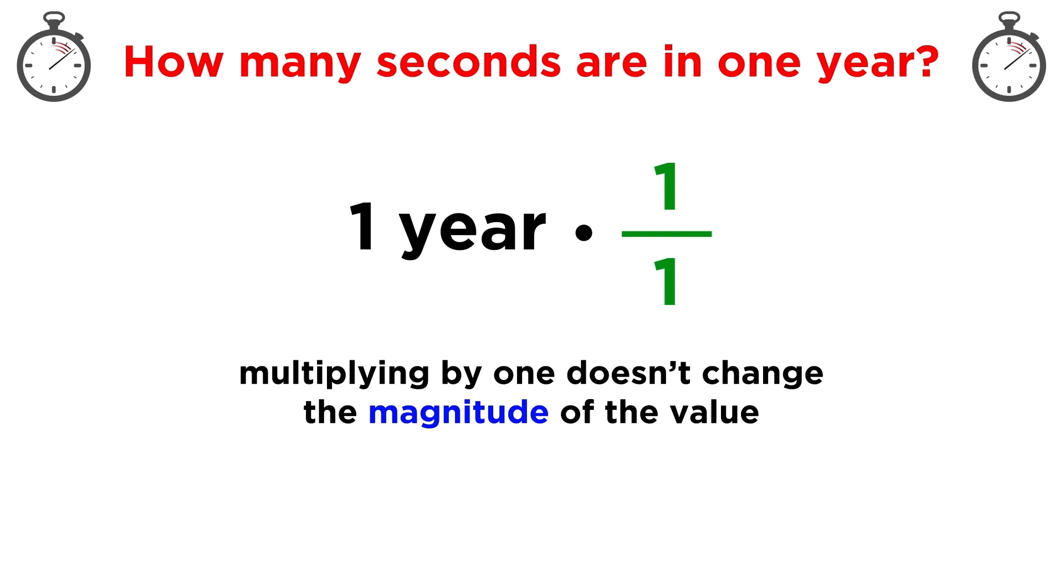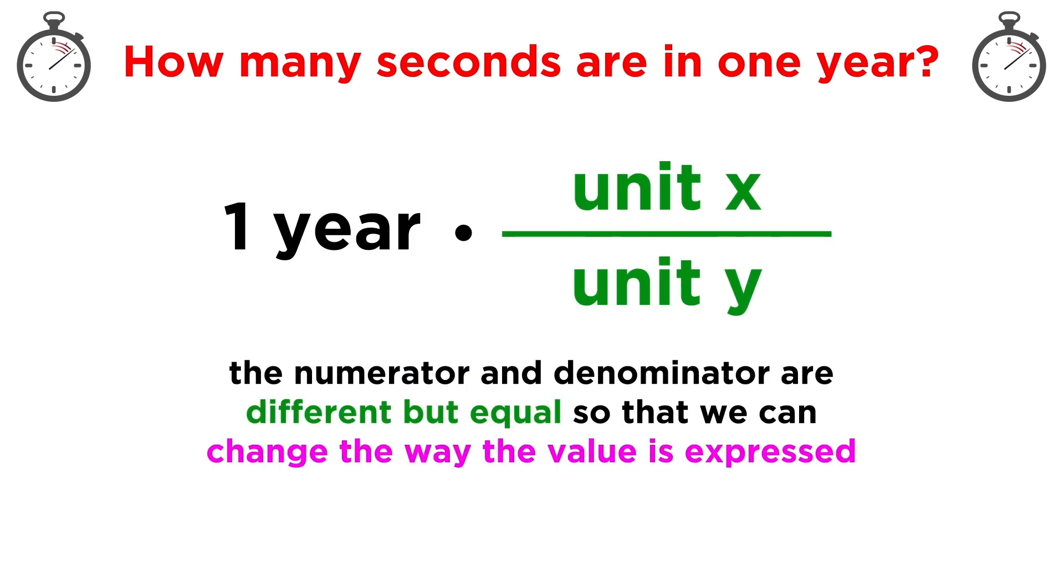Multiplying something by one doesn't change the magnitude of the value, but if the one we multiply with is actually a fraction, meaning that we put things on the top and bottom that are different but equal to each other, then we can change the way our value is expressed.